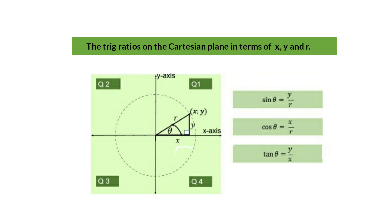This is the terminal side, this is the positive x-axis side, and this angle is called the reference angle — that's still 90 degrees. Now we're going to redefine the ratios: sin θ = y/r, cos θ = x/r, and tan θ = y/x. So y is the same as opposite, r is the same as hypotenuse, and x is the same as adjacent.